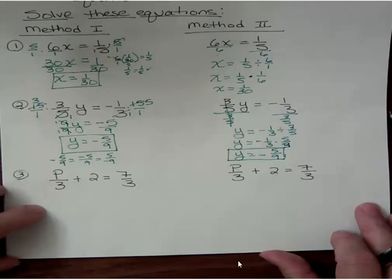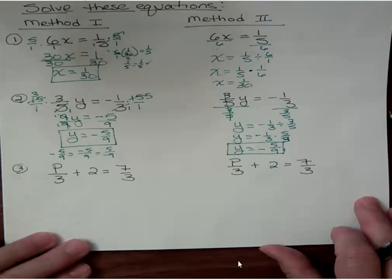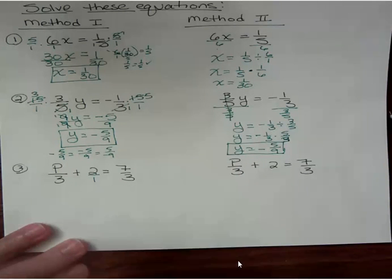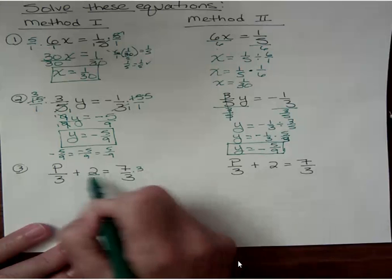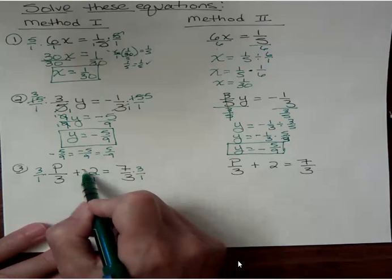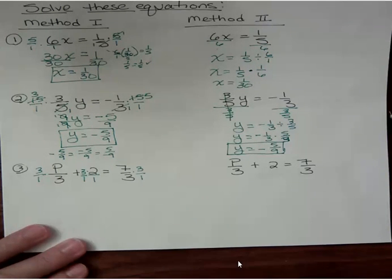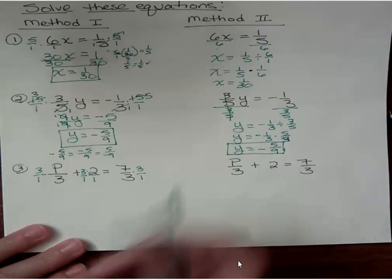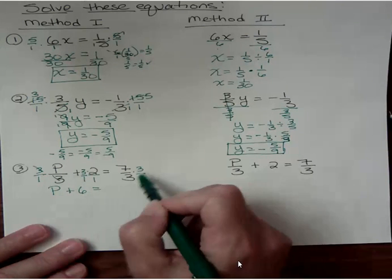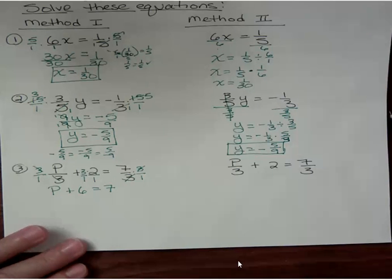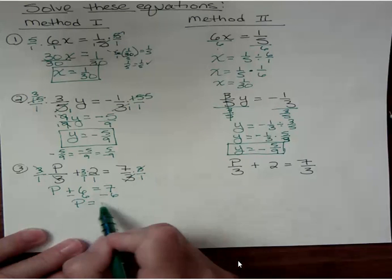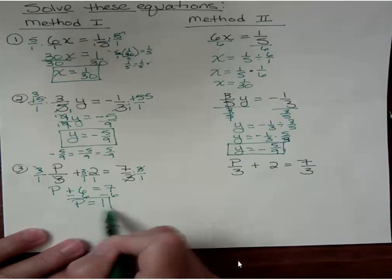Okay in the first method we're going to multiply both sides by the LCD and the reason I wanted to show you this one the LCD here is three because two has a common denominator of one so the least common denominator is three and this is the mistake that people make they start the problem like this. This term has to get multiplied by three as well you have to multiply every term by the least common denominator for this method to work. Now the threes cancel to one so I get just p two times three is six and over here the threes cancel and I get seven. All I have to do then is subtract six from both sides. I already have a coefficient of one so there's no steps left I just get seven minus six is one and I get p equals one.